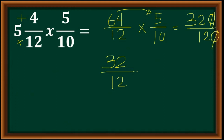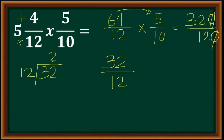How do we convert this improper fraction into a mixed fraction? We use long division. The numerator, 32, is the dividend and the denominator, 12, is the divisor. How many 12s are in 32? There are 2. Then 2 times 12 is 24, and we subtract to get a remainder of 8.